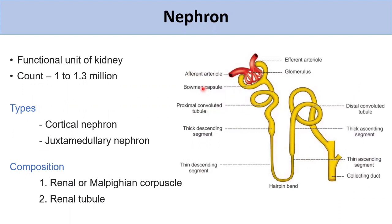The functional unit of the kidney is the nephron. Just as the functional unit of the body is the cell, the functional unit of the kidney is the nephron. There are 1 to 1.3 million nephrons in each kidney. There are two types: cortical nephrons, which make up more than 80-90%, and juxtamedullary nephrons, which make up the remaining 10-15%.